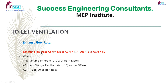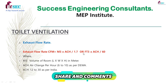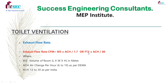Exhaust flow rate CFM is equal to MQ into ACH divided by 1.7. Or if the dimension is given in feet: Q equals volume into air changes per hour divided by 60, where MQ is nothing but the volume of the room — length, width, and height in meters. ACH, air changes per hour, 6 to 10 is considered as per DEWA.